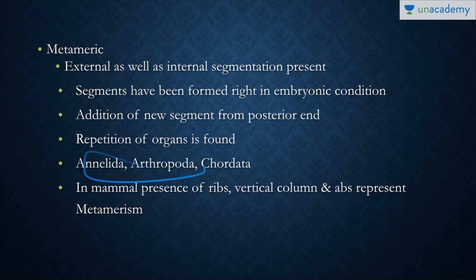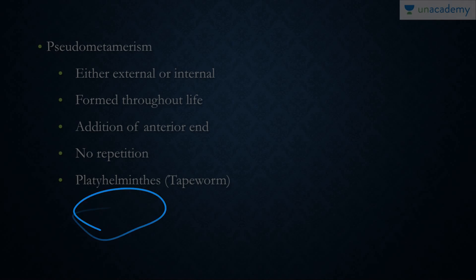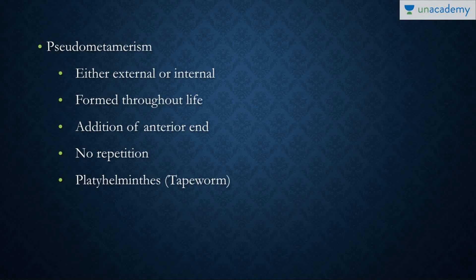Examples of metameric segmentation include Annelida, Arthropods, and Chordates. In mammals, the presence of ribs, the vertebral column, and the abdominal muscles are suggestive of metamerism in adults.